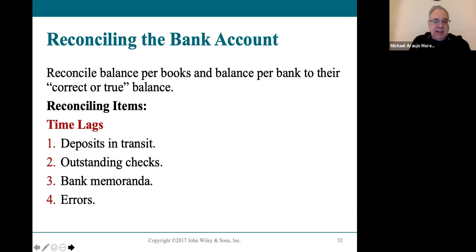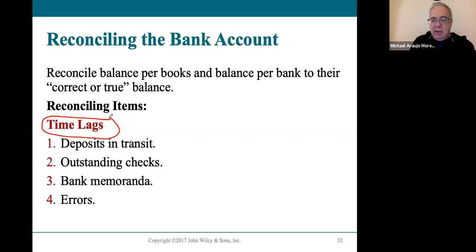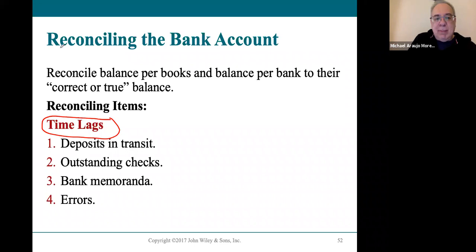Your bank statement is dated at a particular date, usually end of month. That's different from your books, where you record transactions as they happen — you make a deposit, you put it in your books; you cut checks, you subtract them right away. So your book balance is clearly going to differ from your bank balance because of the lag in when transactions hit the accounts. These time lags are the key to understanding how we reconcile.